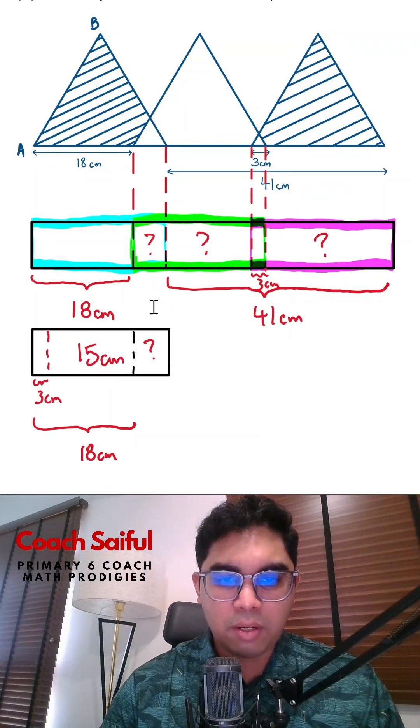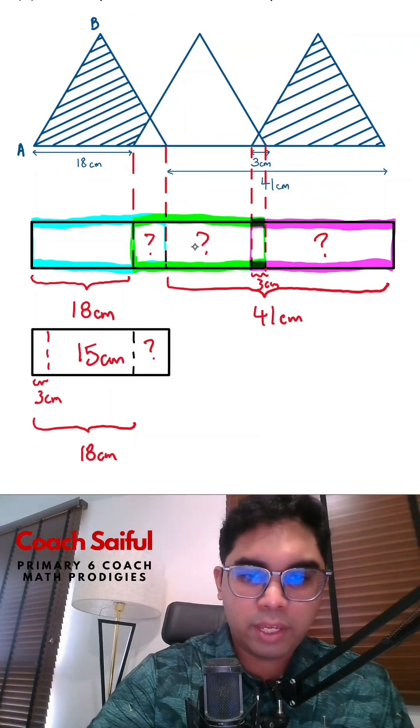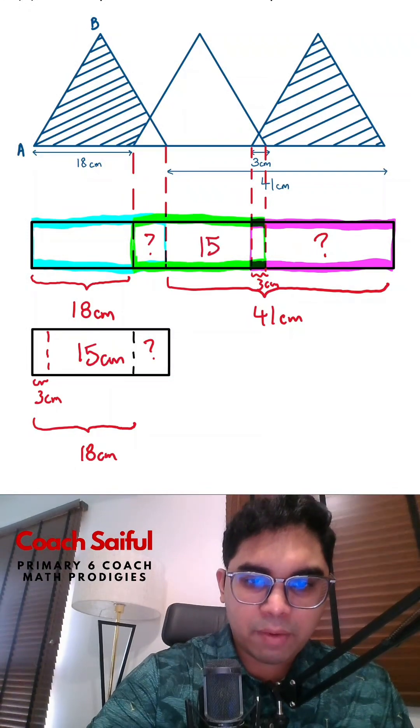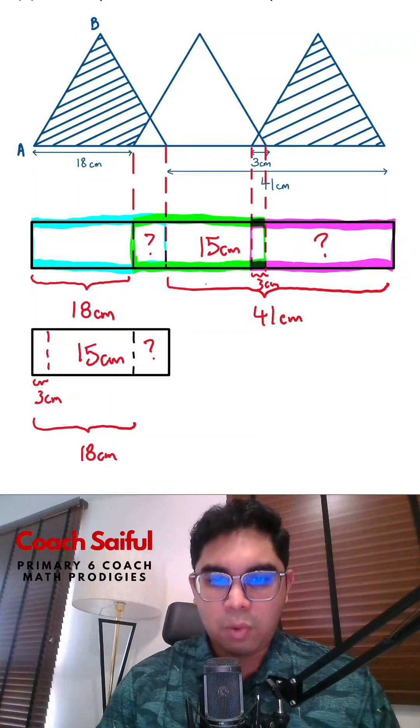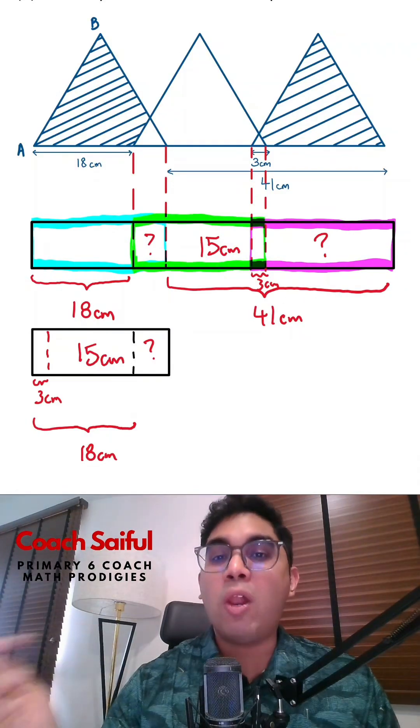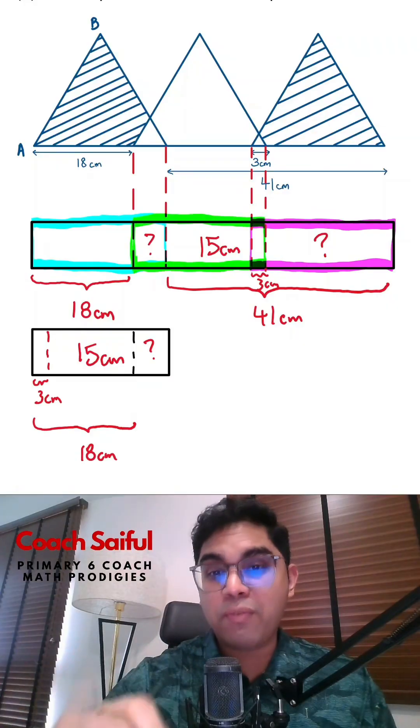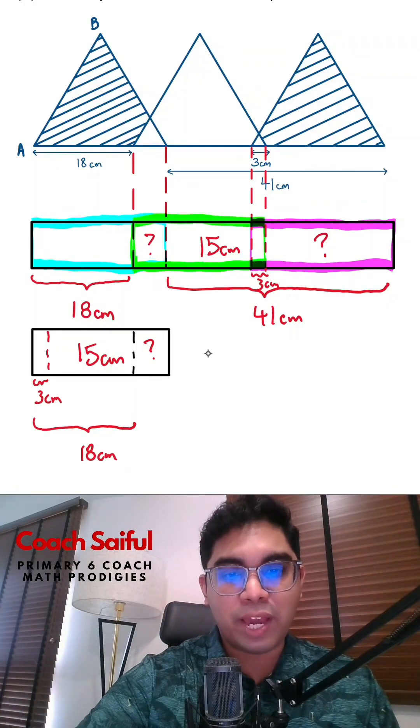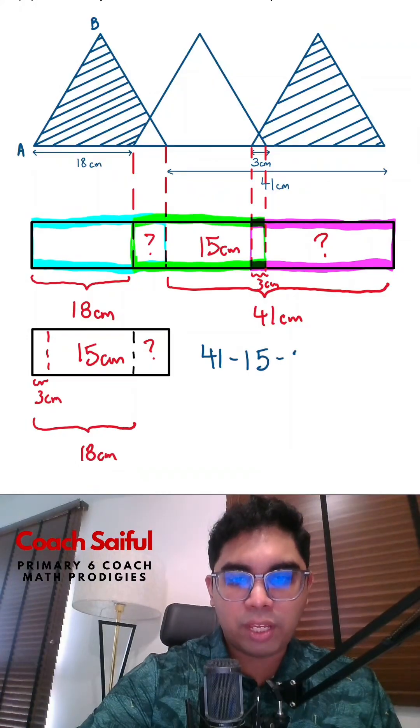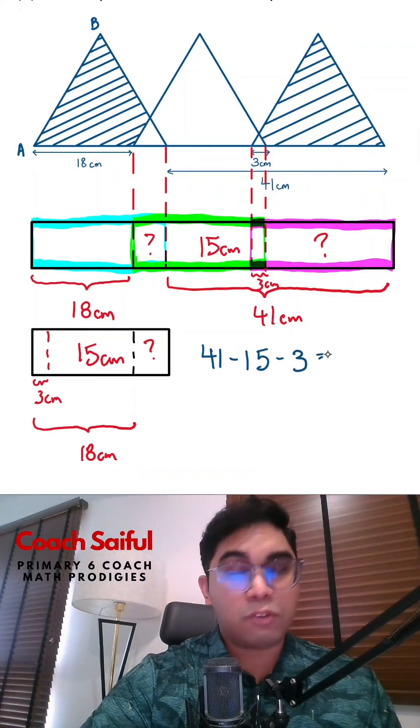Now remember, if this is 15, this corresponds to the length over here. Now, once I know that, right, it becomes very simple because we have 15cm, we have 3cm, and we have 41cm. You see that? All I have to do is subtract the 15 and 3 from the 41 to get the segment that we want to find, which is 41 minus 15 minus 3, minus 18 gives you 23, right?